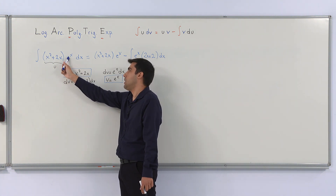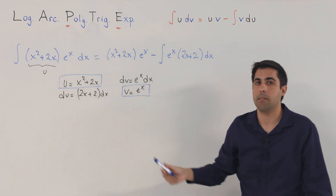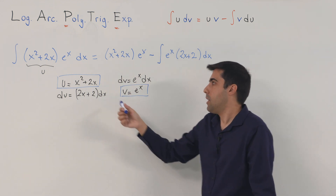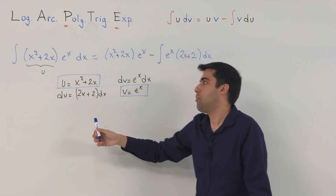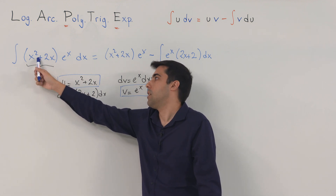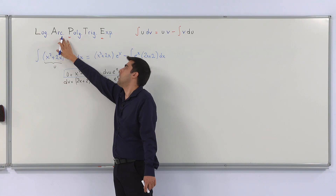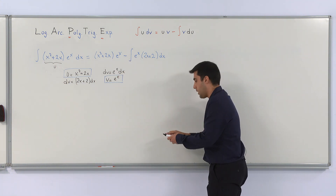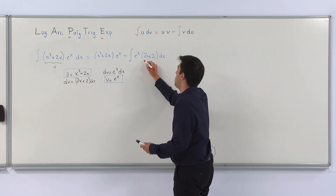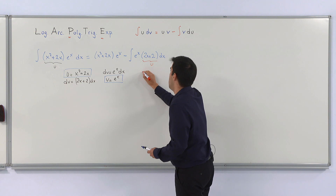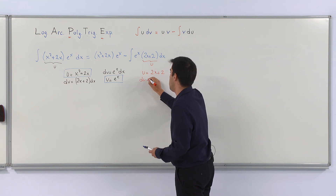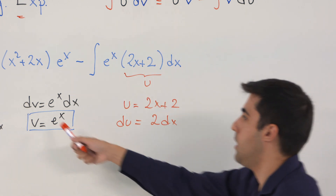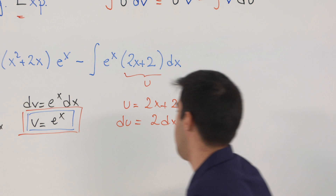If you pick e to the x as u, it will stay the same because its derivative is always e to the x, and the problem will never disappear — in fact, it will get worse, increasing the degree of the polynomial each time. That's why we need to be careful which one to pick as u. Reapplying integration by parts, I label the polynomial as u again: u is 2x plus 2, so du is 2 dx. What is left, e to the x dx, is dv, so v stays the same.